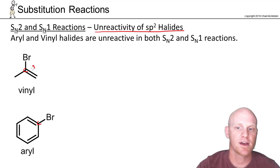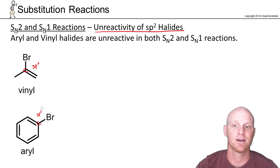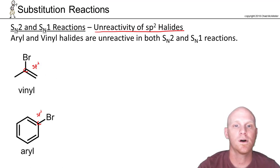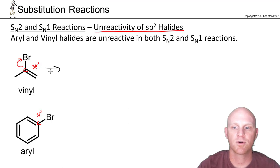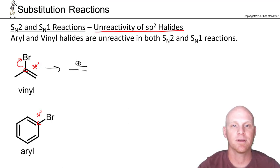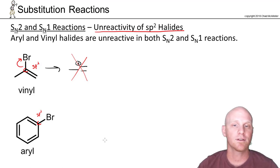In both cases that carbon is SP2 hybridized, and as a result, both SN1 and SN2 are not going to occur, but for different reasons. SN1 is not going to occur because if this leaving group just left, the carbocation that would result would be very unstable — even less stable than a primary carbocation, and those don't generally form. So no SN1, because you're not going to form any kind of stable carbocation.